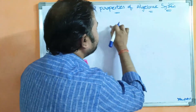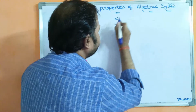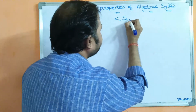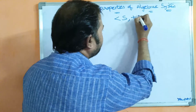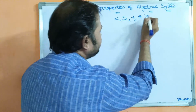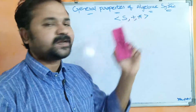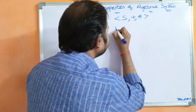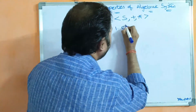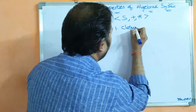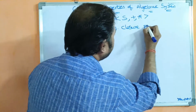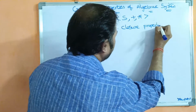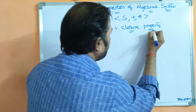Let us have an algebraic system where the set name is S, and we can perform two binary operations on the set: plus and star. The first property of the algebraic system is closure property. Let us see what closure property is.